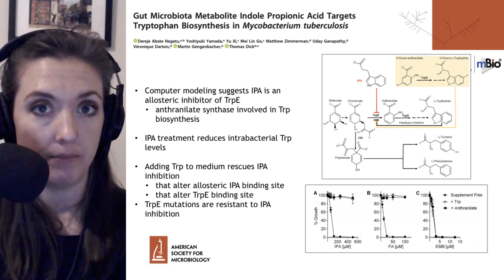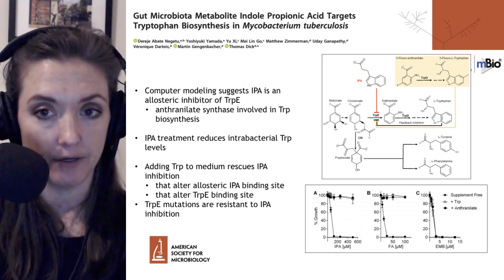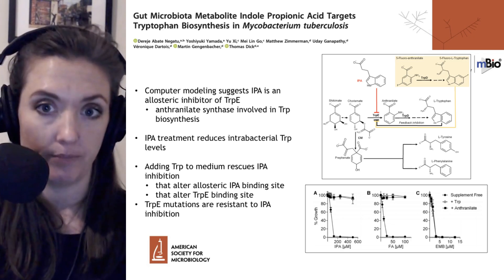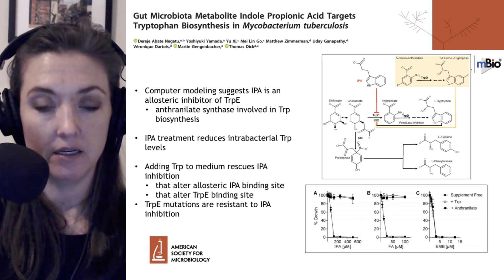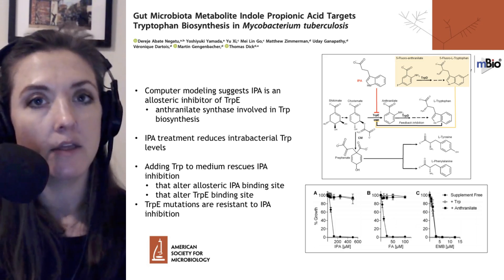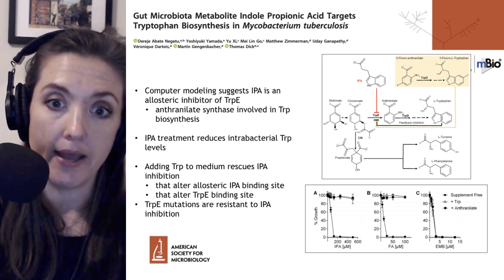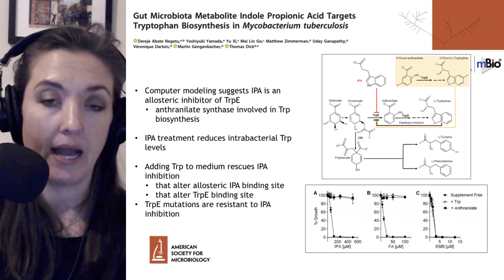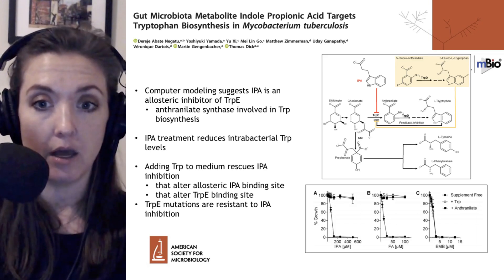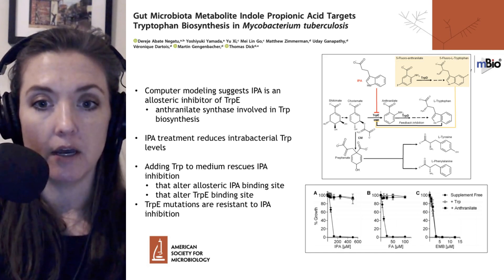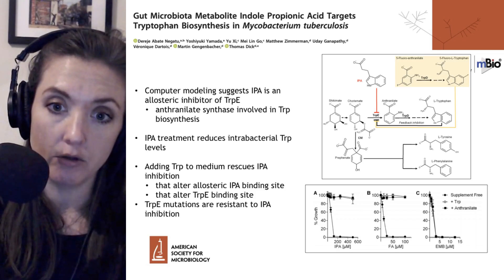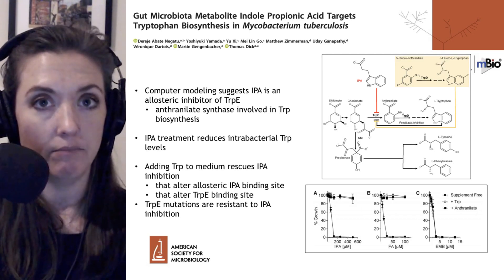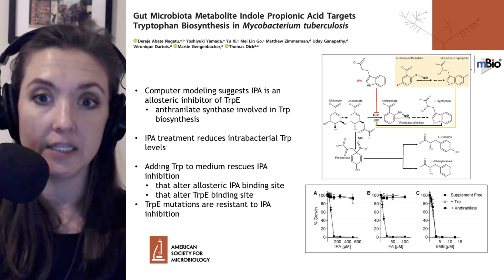They showed that IPA treatment of MTB cultures can reduce intrabacterial tryptophan levels, confirming that IPA does affect tryptophan synthesis. By adding tryptophan to the medium, they rescued that inhibition, as shown in the growth curves on the lower right-hand side. They also complemented these biochemical studies with genetic studies by generating mutations in the TrpE enzyme. Mutations in the TrpE binding site for IPA changed or abrogated IPA's inhibition, while mutations that altered the TrpE binding site mimicked the same IPA inhibition.